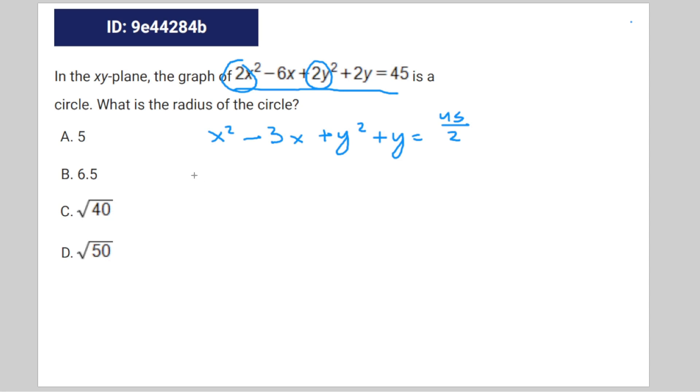Next step we're going to complete the square. x squared minus 3x and then we're gonna plus, divide this by 2 and then put that to the power of 2. That'll be negative 3 divided by 2 to the power of 2, which equals 9 fourths. So plus 9 fourths.